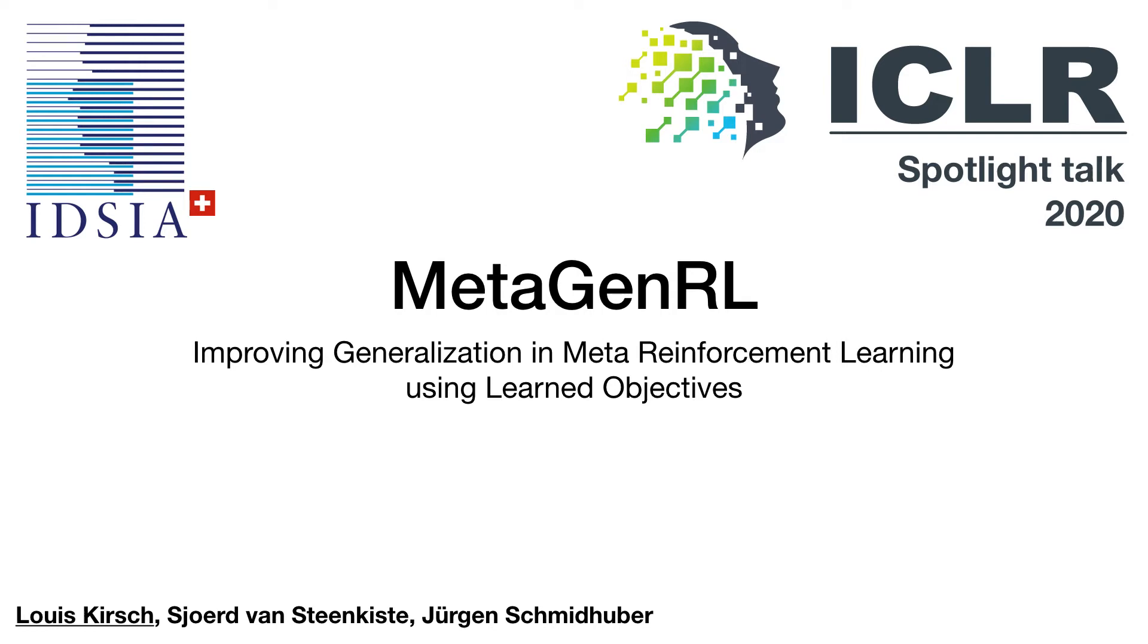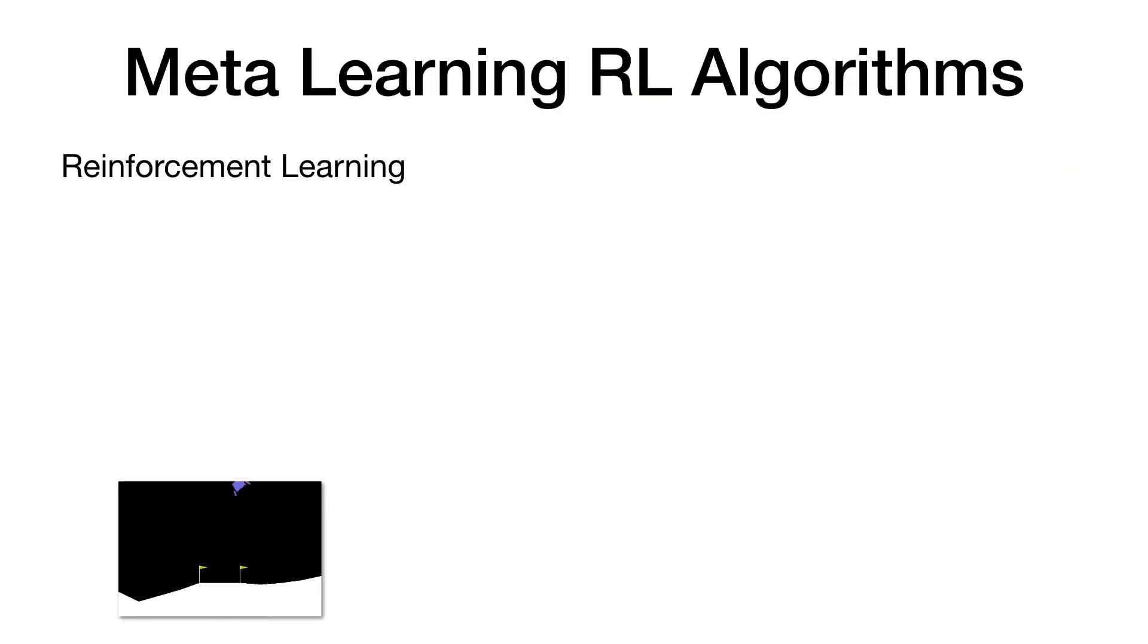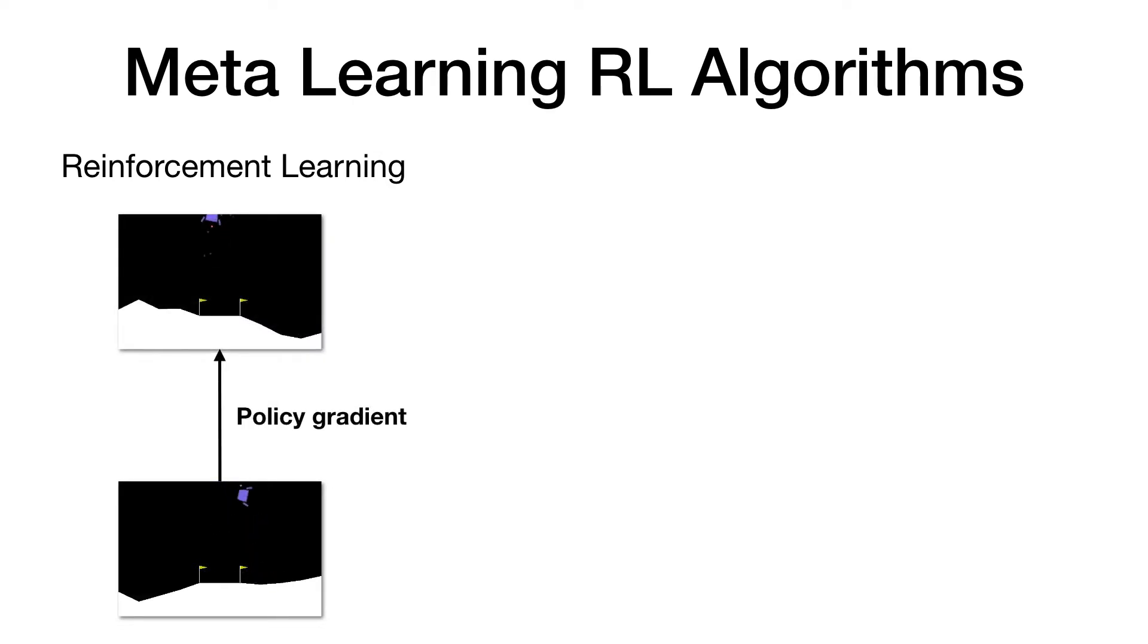The goal of this research is to meta-learn new reinforcement learning algorithms that can be reused in different environments. We are given an RL environment such as this lunar lander. In conventional RL, we as researchers would invent a learning algorithm, say a policy gradient, to maximize the expected reward.